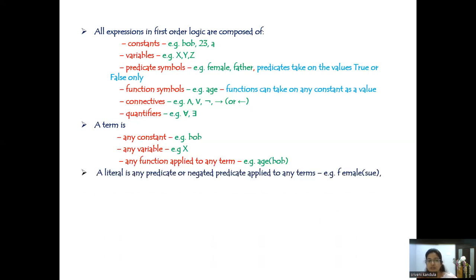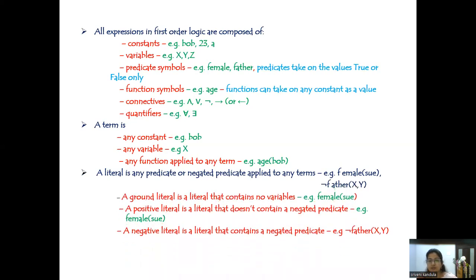Then coming to a literal. A literal is any predicate or a negated predicate applied to any terms. For example, 'female' is a predicate — to that we are supplying some constant or term, which is a name. So this we call as a literal. In the FOIL algorithm we will be working with literals only. Similarly, negation of order(x, y) — this is also a predicate, and hence a literal.